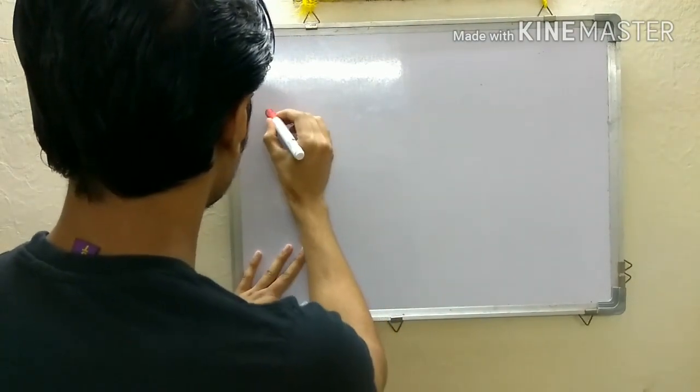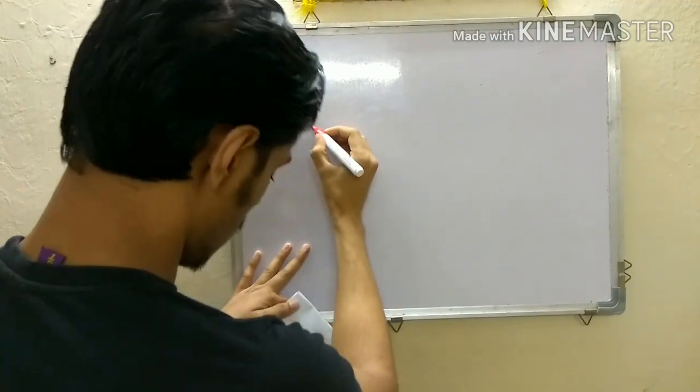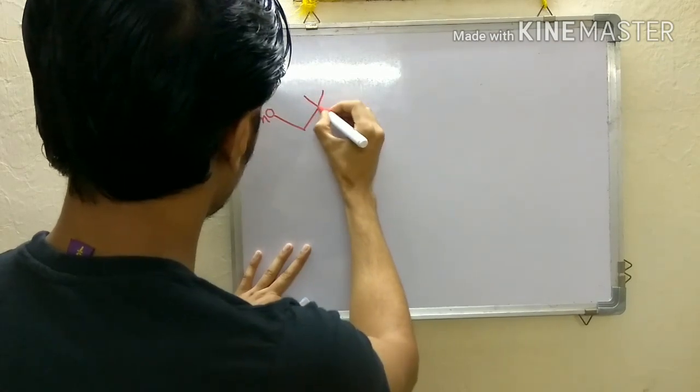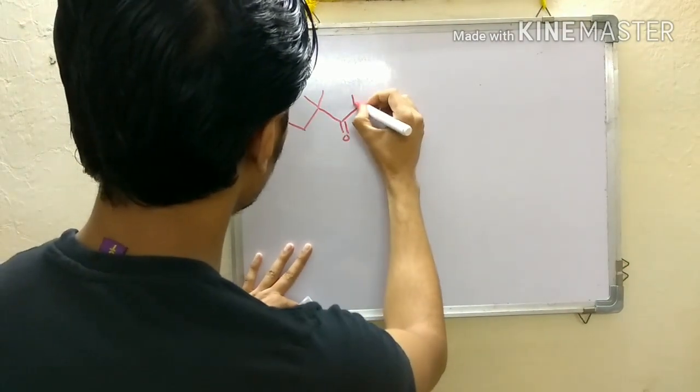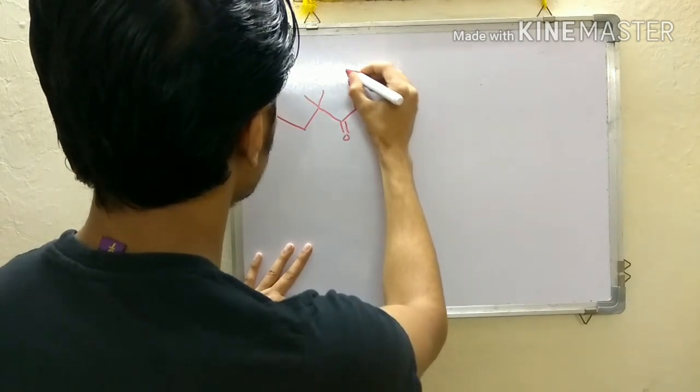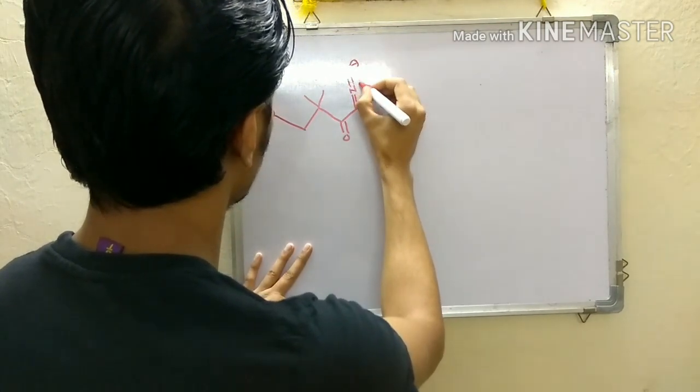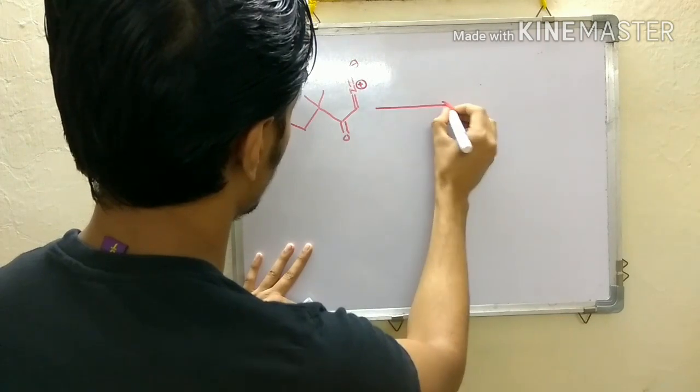And the next problem is you have given this OBn - there are two methyl groups, there is a carbonyl group and again there is the N2 group.